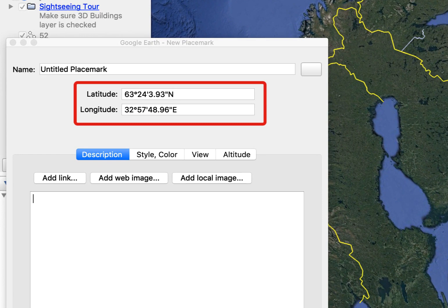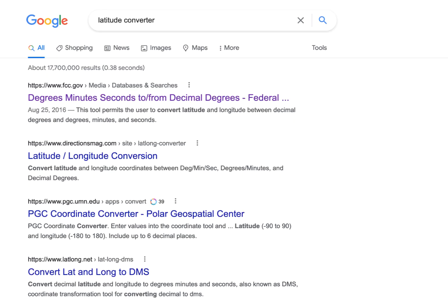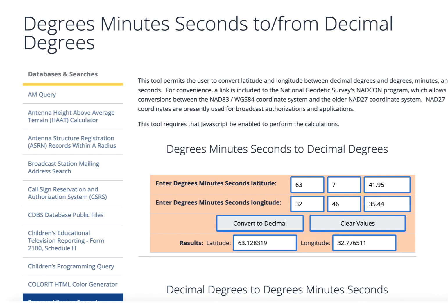These will be in the standard degrees, minutes, seconds format, and need to convert these into decimal format to use them in QGIS. Luckily, there are websites that will do this for you. Do a quick search for latitude converter and you'll see a bunch of them. This one is from the FCC.